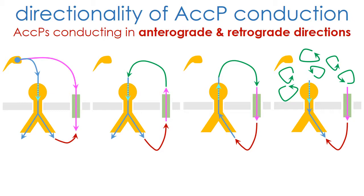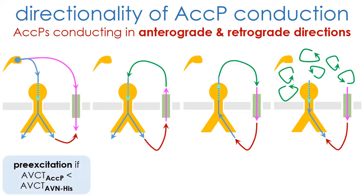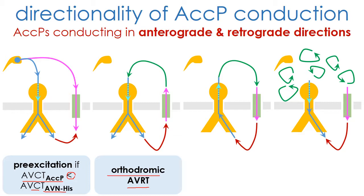Patients with accessory pathways conducting both in the anterograde and retrograde directions may exhibit ventricular pre-excitation during sinus rhythm if the atrioventricular conduction times via the accessory pathway are shorter than the atrioventricular conduction times via the AV node, His pathway. They can also present a non-pre-excited form of atrioventricular reciprocating tachycardia that is called orthodromic, because ventricular activation is via the normal AV node, His pathway, while the accessory pathway is used for retrograde ventricular-atrial conduction.